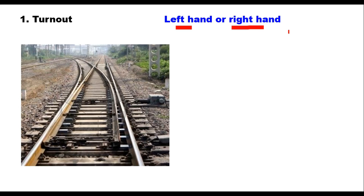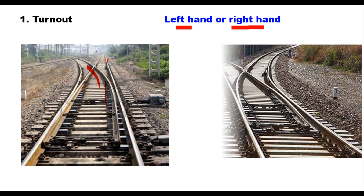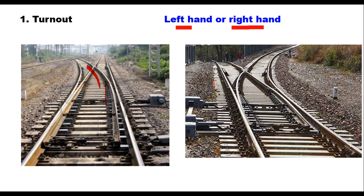In a left-hand turnout, the railway vehicle is being transferred to the left of the main line. In a right-hand turnout, the railway vehicle is being transferred to the right side of the main line.